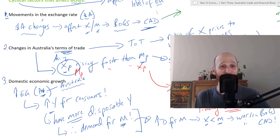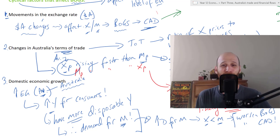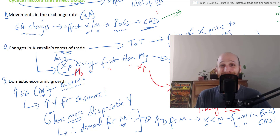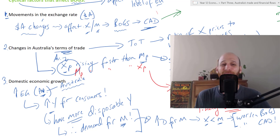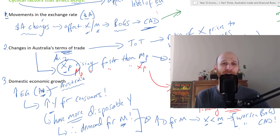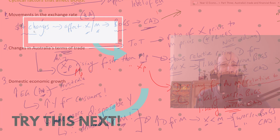So higher domestic economic growth is likely to worsen Australia's BOGS and its current account deficit. You can flip the situation and add that to your notes now, before we move into those structural factors.